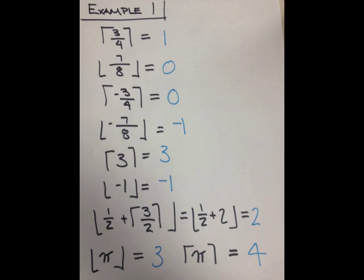A couple more complicated examples: the floor of 1/2 plus the ceiling of 3/2 is equal to the floor of 1/2 plus 2, which is 2, because the floor of 2 and 1/2 is 2. Finally, looking at an irrational number, pi — 3.14159... — the floor of 3.14159... is 3 and the ceiling of that same number is 4.